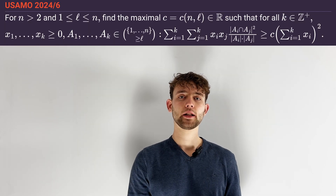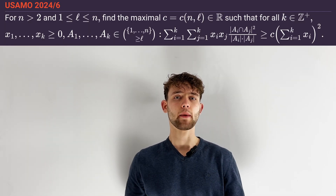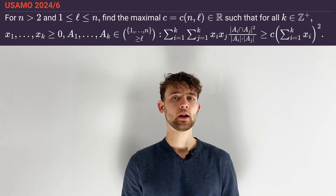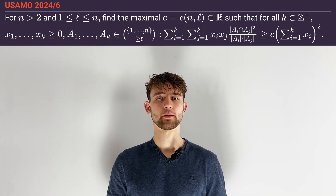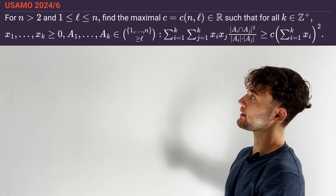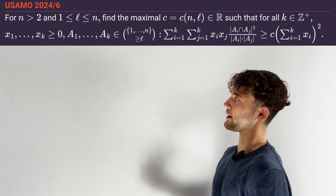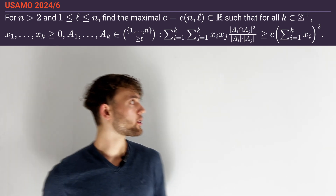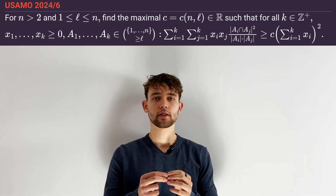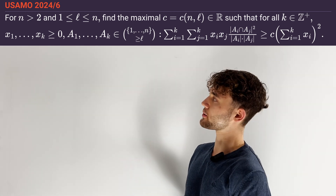Hey guys, in this video I'm going to present USAMO 2024 Problem 6. First let's take a look at the problem statement. We are given n greater than 2 and another positive integer l less than or equal to n. Now we consider positive integers k and non-negative real coefficients x₁ up to xk.